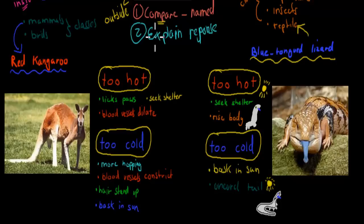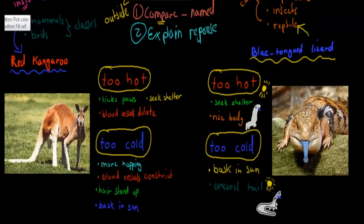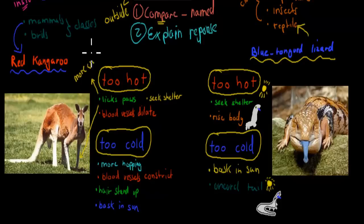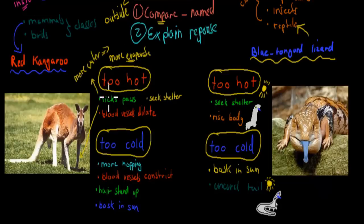Now we have to compare their responses — what happens when it's too hot and when it's too cold, and also explain why each response is important. When it's too hot, the red kangaroo will lick its paws. The reason it does this is because licking its paws makes them more wet, meaning more water can evaporate. Just like sweating, more evaporation means more cooling. So licking its paws increases evaporation and cools it down.